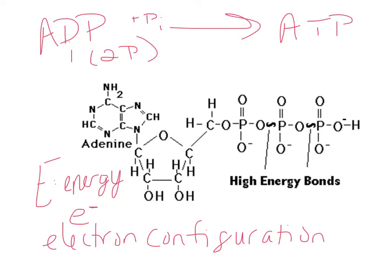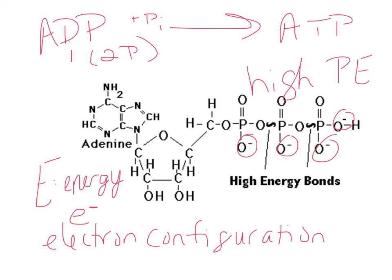ATP stores energy based on its electron configuration. These three phosphate groups have four negative charges in a relatively small area. Negative charges repel each other, so that results in very high potential energy in those bonds. That repulsion also weakens the bonds between the phosphate groups — that's part of why they're unstable. They're considered high-energy bonds.